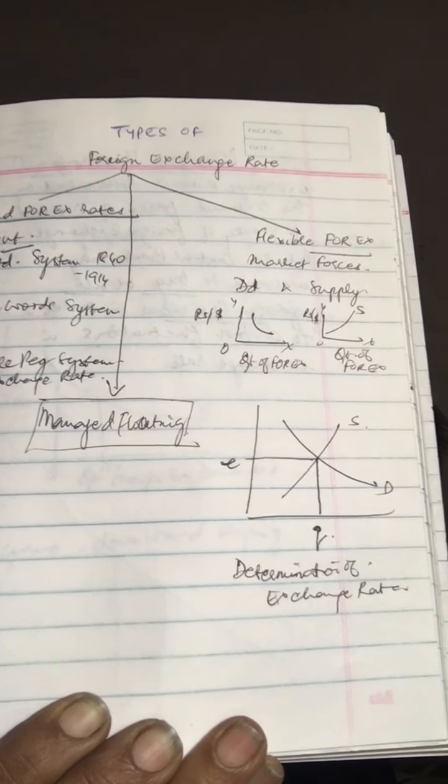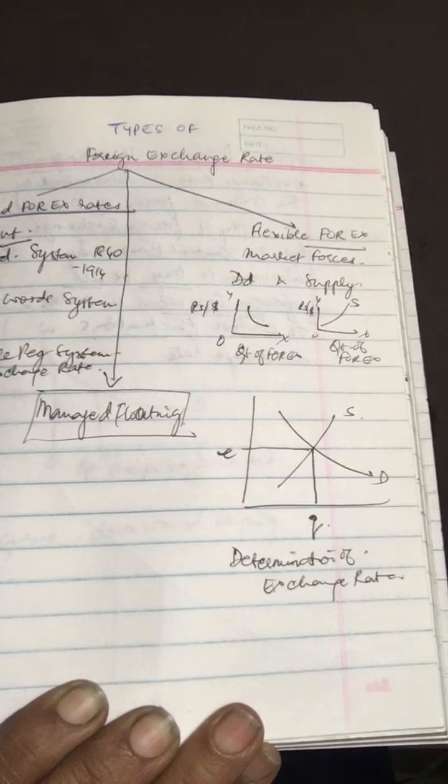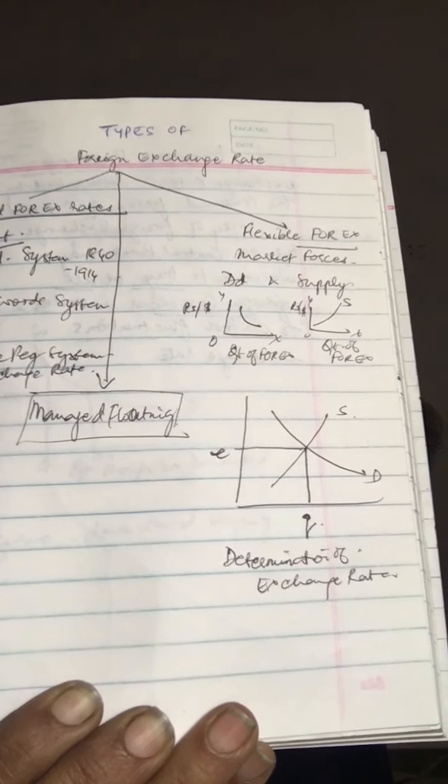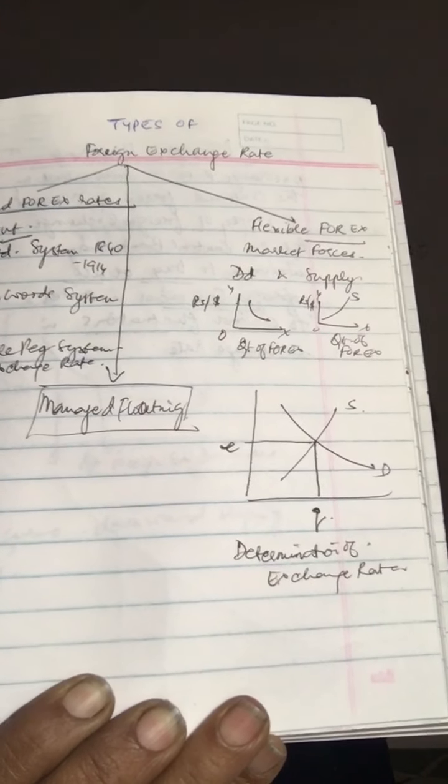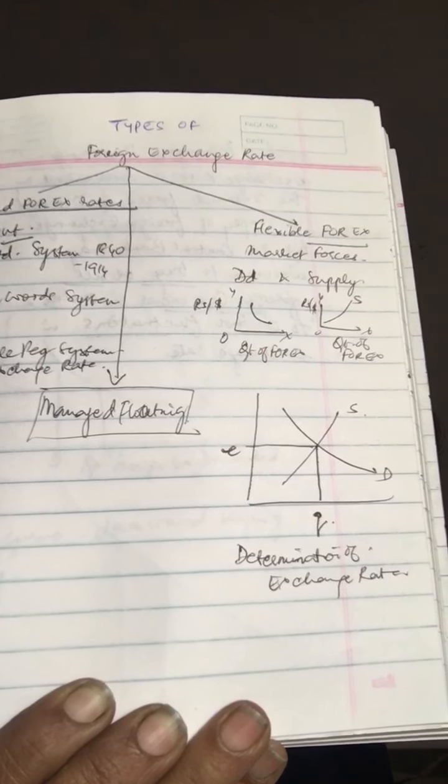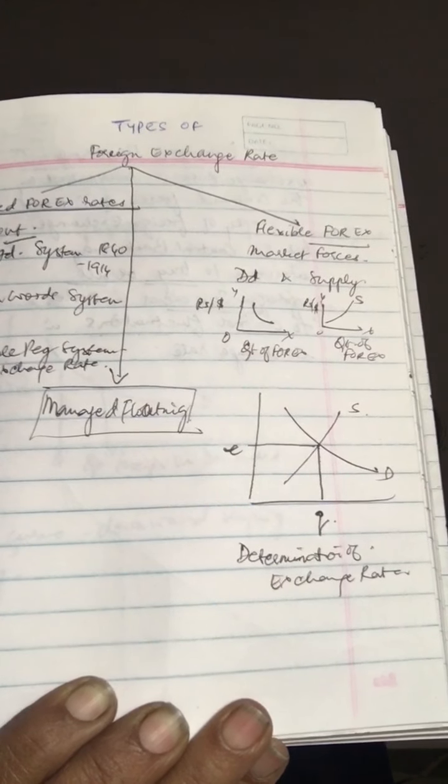Then one pound would be equal to 125 divided by 25, which equals 5 U.S. dollars. So that's how the exchange rate was fixed as one pound equals five dollars.